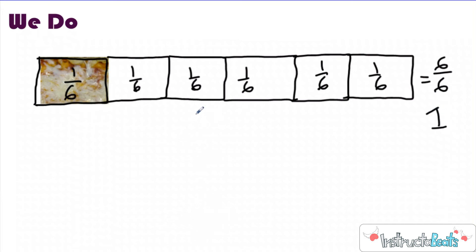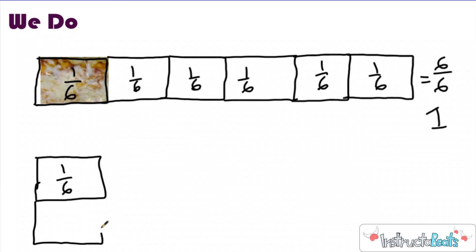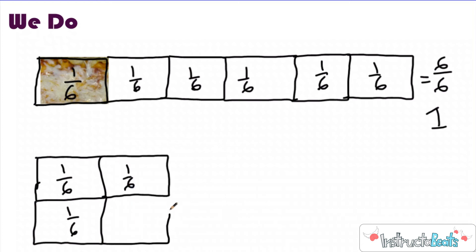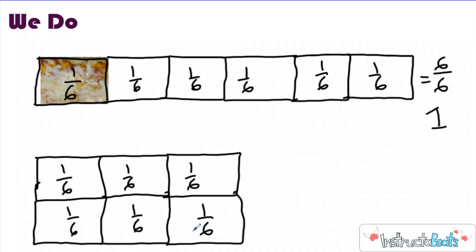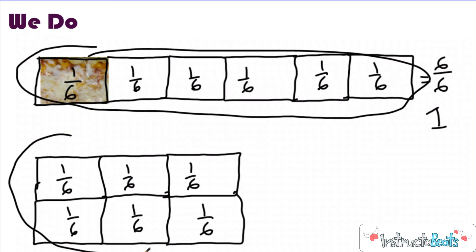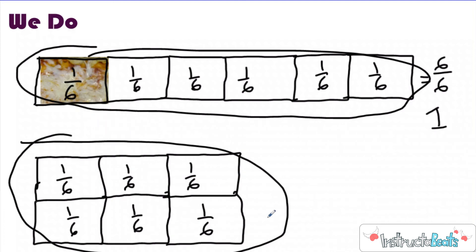You could also take that unit fraction and put it together in a different way to make a different-looking pizza that's still the same size. Maybe I wanted to arrange it differently — one sixth here, another one sixth, another one sixth — that would be four sixths. Right here you can see I took the unit fraction and put it together in a different way. But here's the thing: because it was a unit fraction and an equal part of the whole, if you ate the top pizza and I ate the bottom pizza, we ate the same amount, because both were made up of six sixths and each one sixth was the same size.